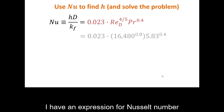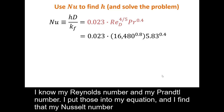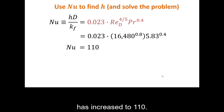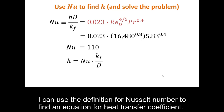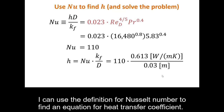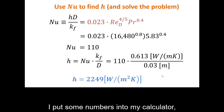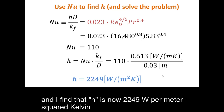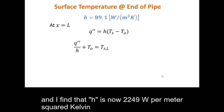With the correlation selected, I have an expression for Nusselt number. Substituting my Reynolds number of 16,480 and the Prandtl number into the equation, I find that the Nusselt number has increased to 110. Using the definition of Nusselt number to solve for h, I find the new heat transfer coefficient is 2,249 W/m²·K.